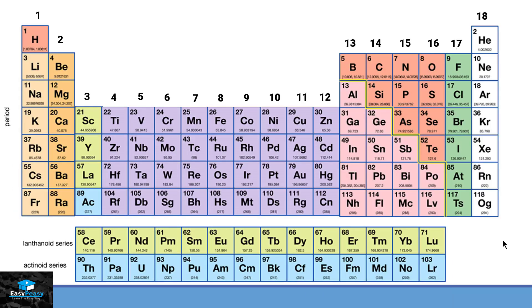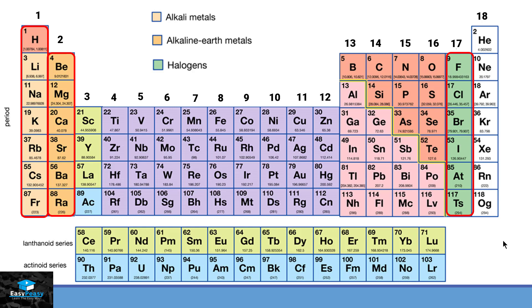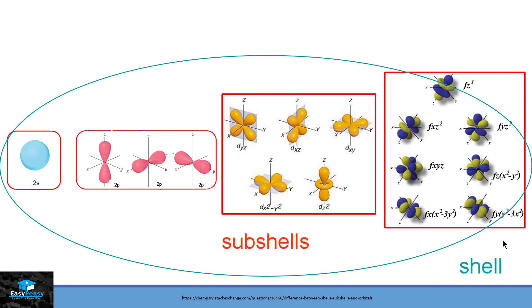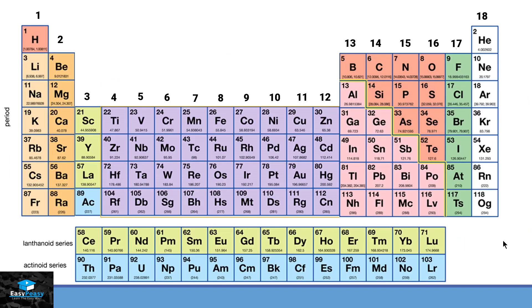Some groups also have specific names. Group 1, besides hydrogen, is called alkali metals. Group 2 is called alkaline earth metals. Group 17 is called halogens and group 18 is called noble gases. If you remember the subshells and shells from the previous video, the periodic table also allows us to find all the elements present in those subshells. Group 1 and group 2 belong to the S block elements.